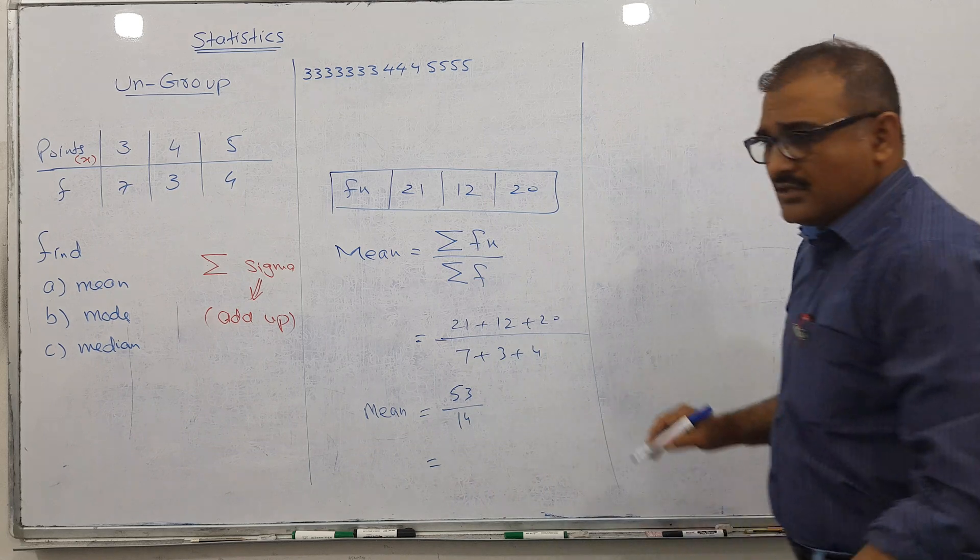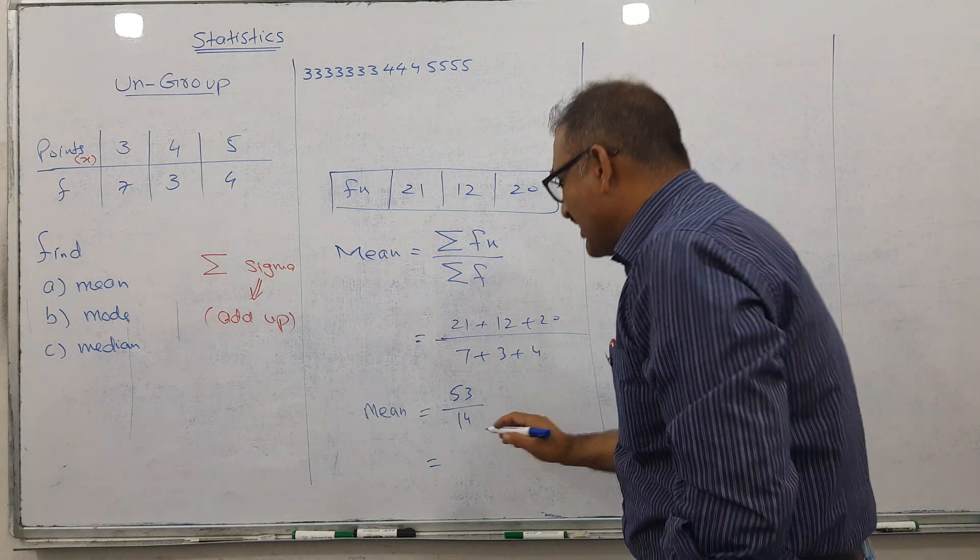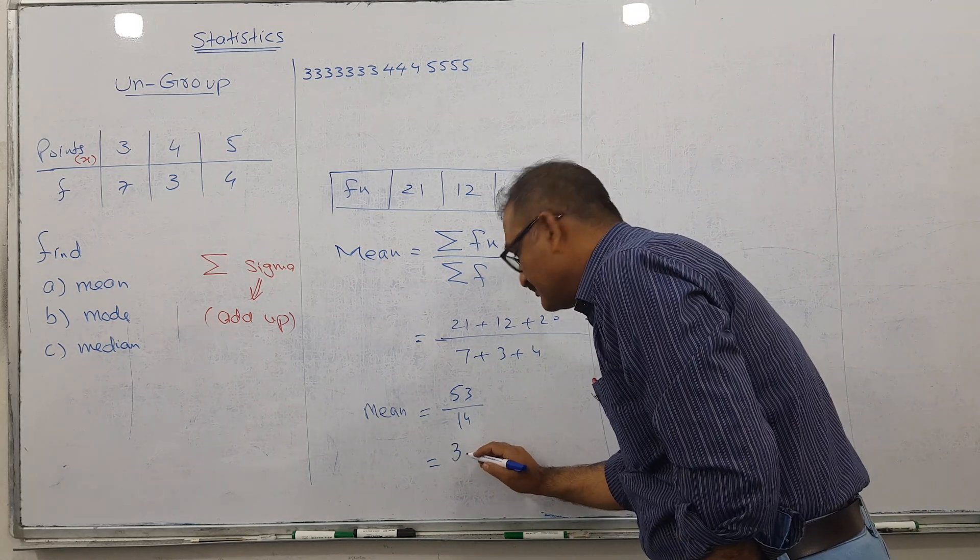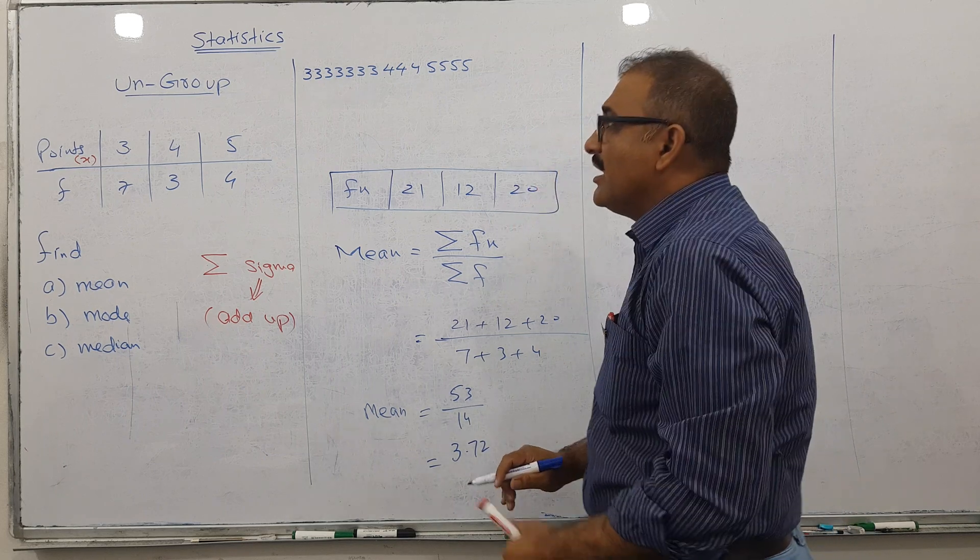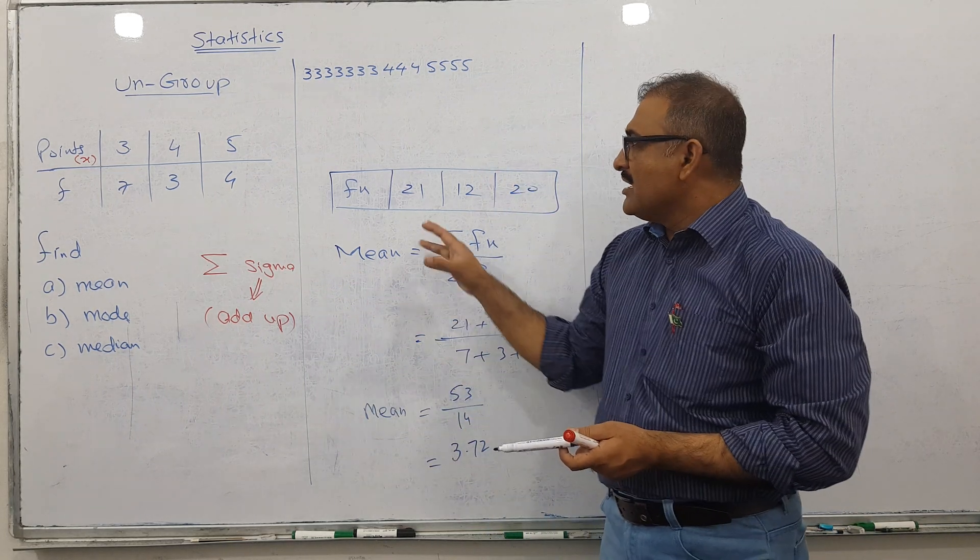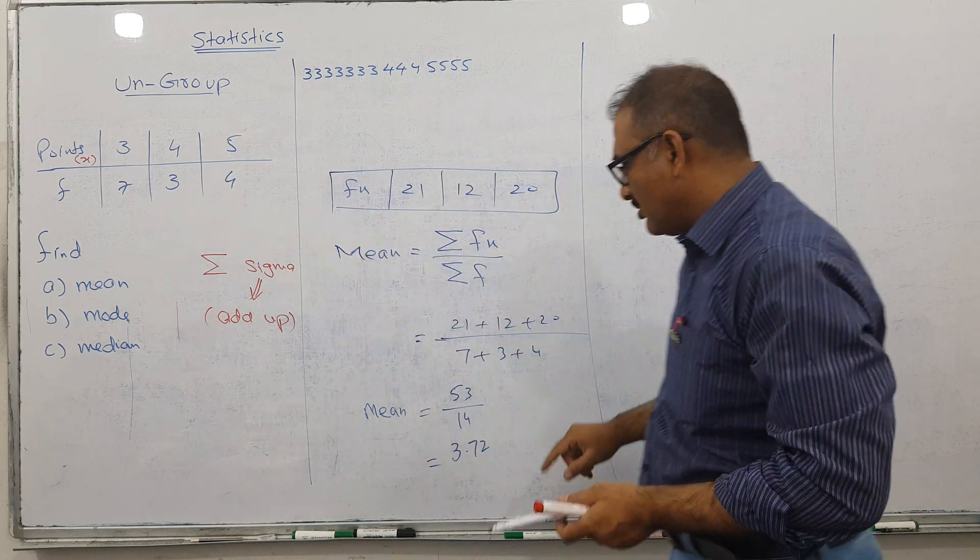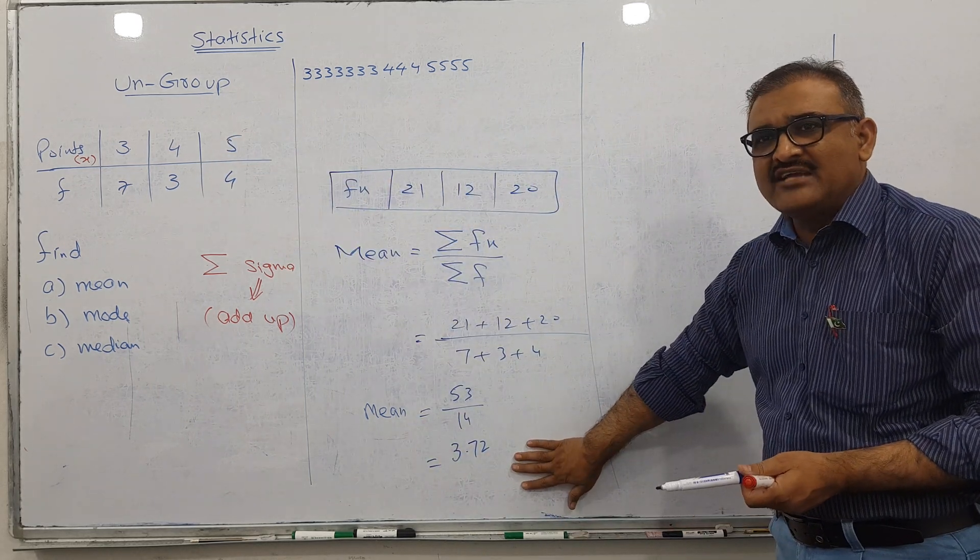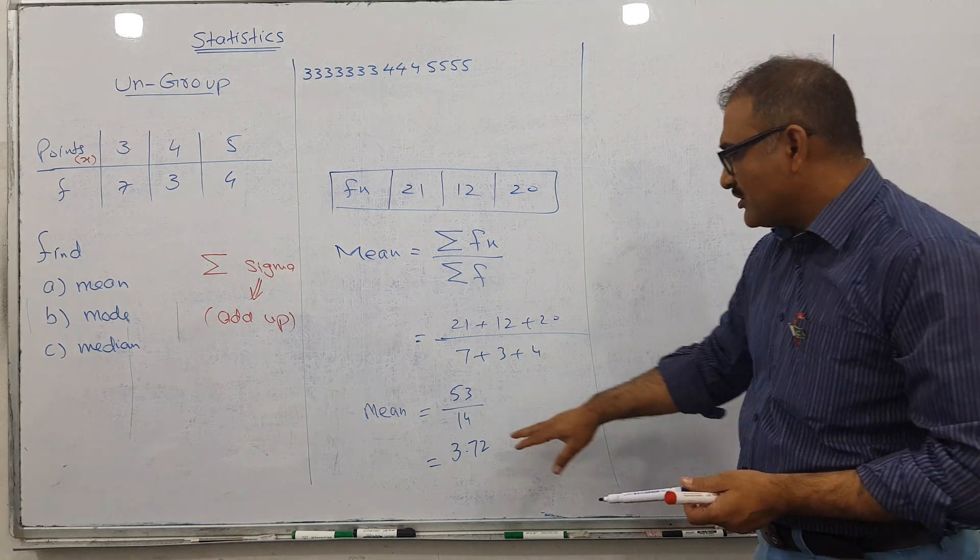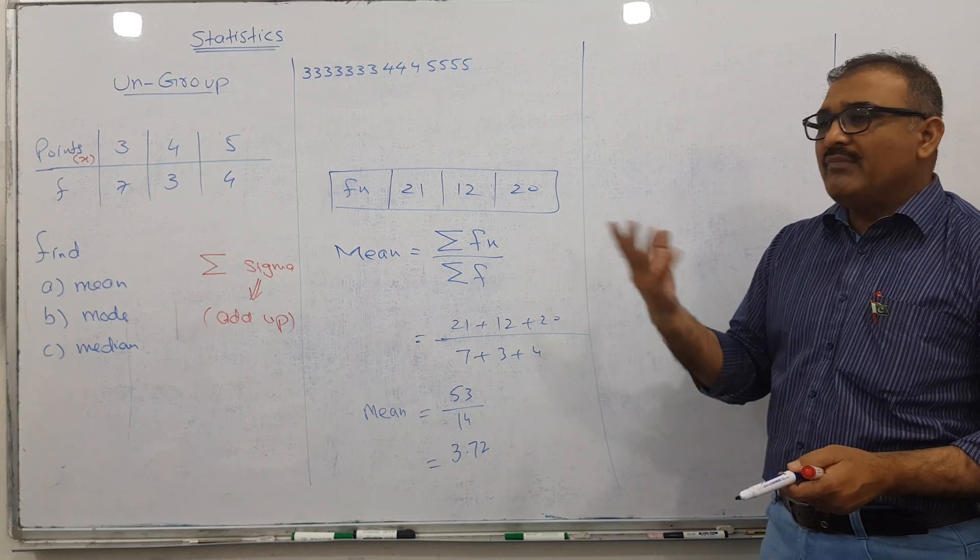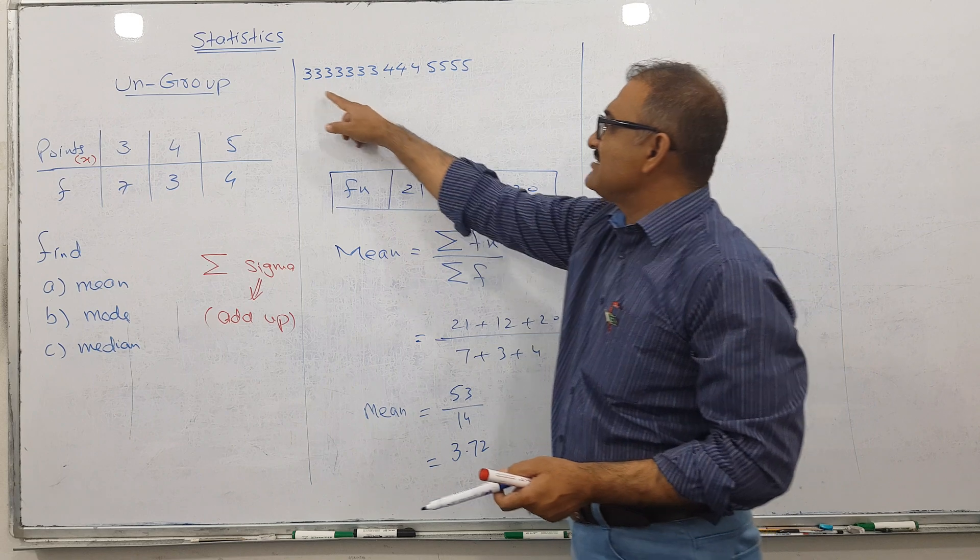The answer is 3.78. This is the average. Normally in raw data, we add them all and divide by the number of values.